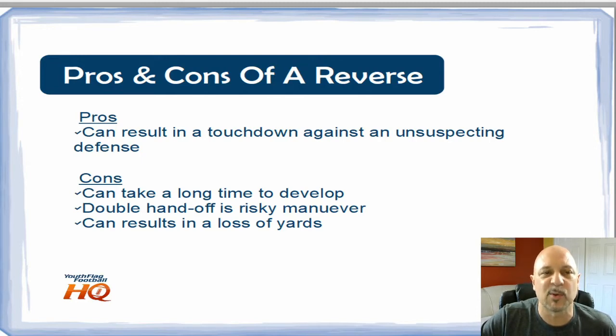The problems with this play is that it takes a long time to develop. You're talking two handoffs, so one player is running across the field handing to another player that's running back in the opposite direction. It relies on two handoffs which could be fumbled, and if it is fumbled you will result in a loss of yards. One word of caution: do not attempt to run the reverse in your own end zone because if you drop the ball you're going to get a safety against you.